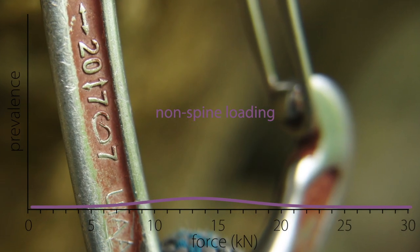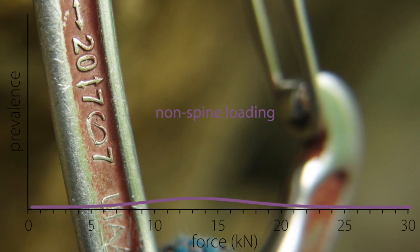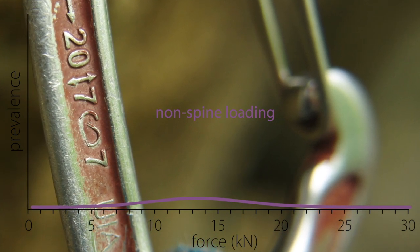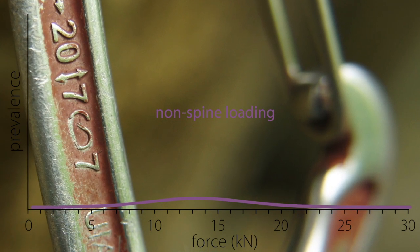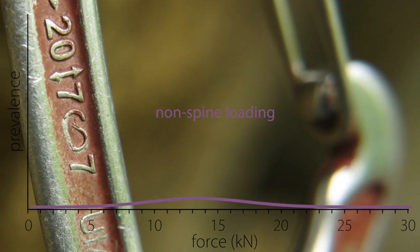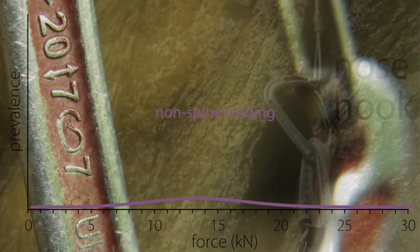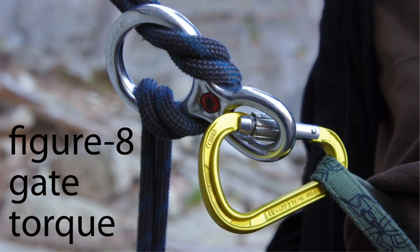The 7kN strength required by the UIAA carabiner standard for the open gate and minor axis loading provide a ballpark strength for many of these loadings that are not along the spine. But carabiner failure for some of these loading situations can be as low as body weight, especially the nose hook and the figure eight gate torque.